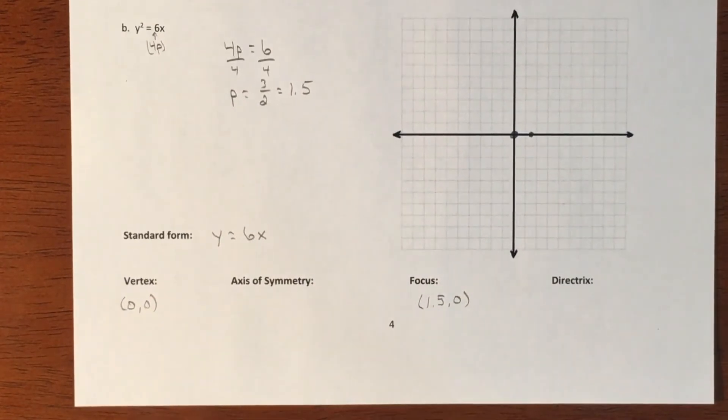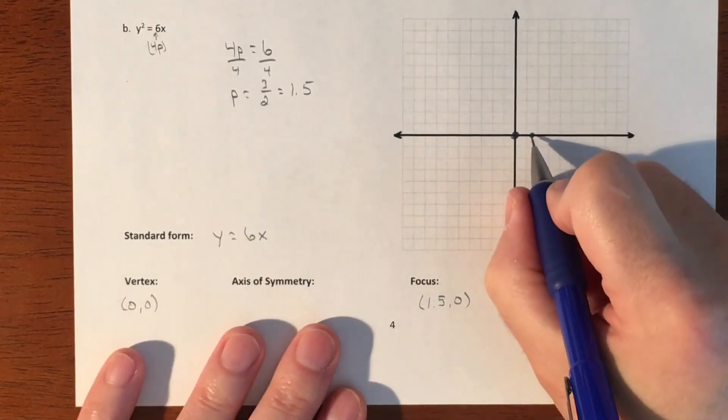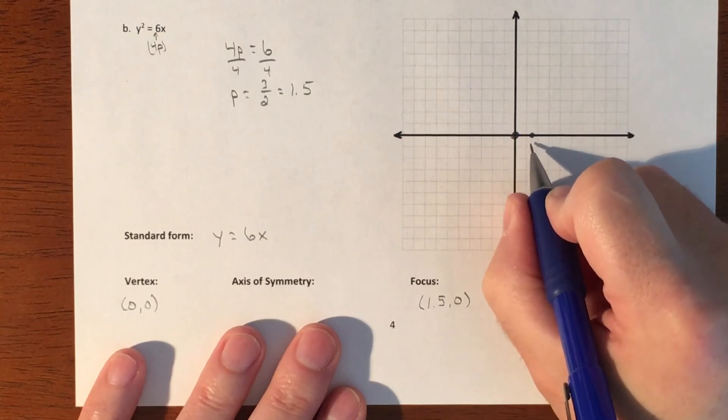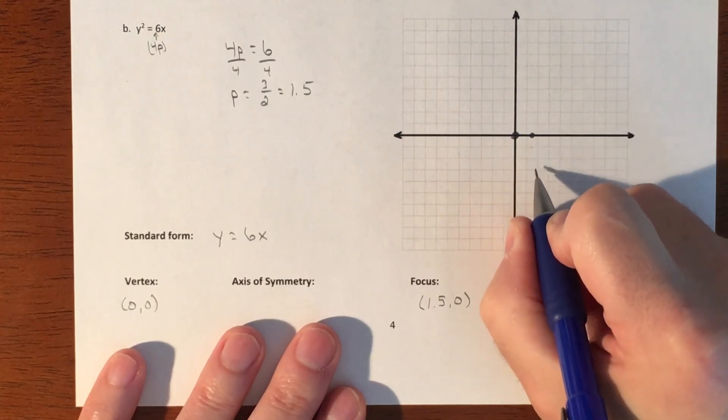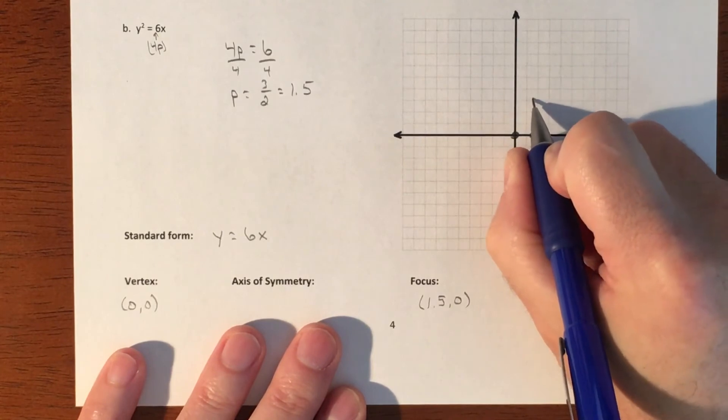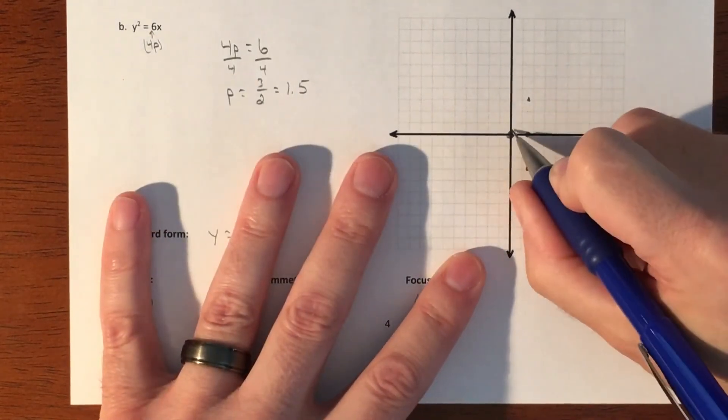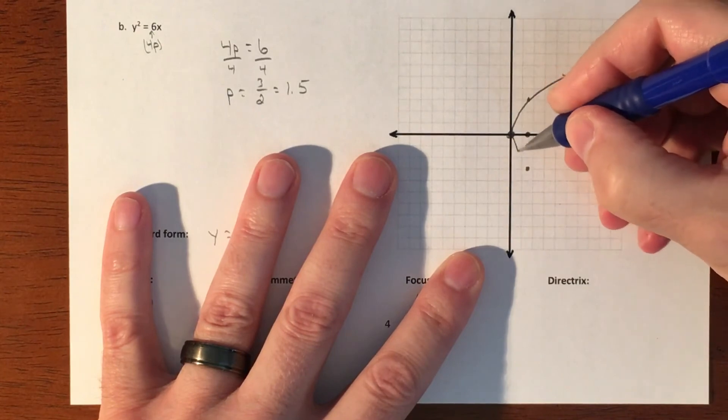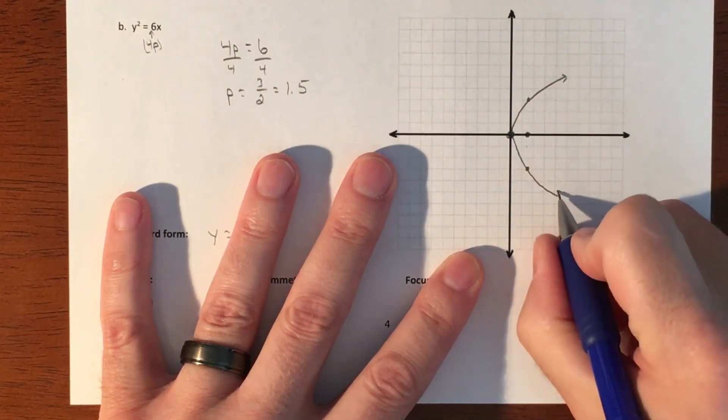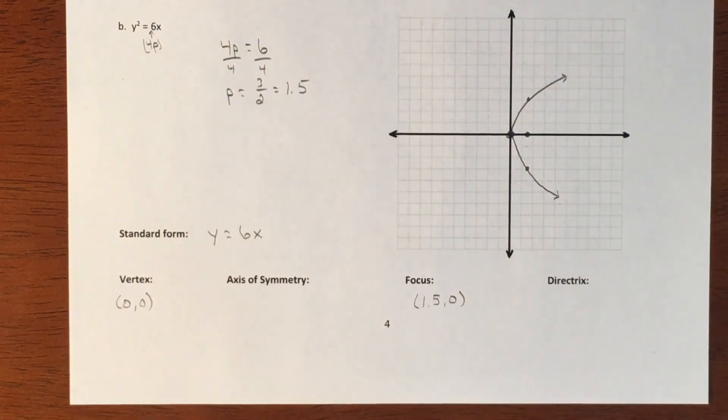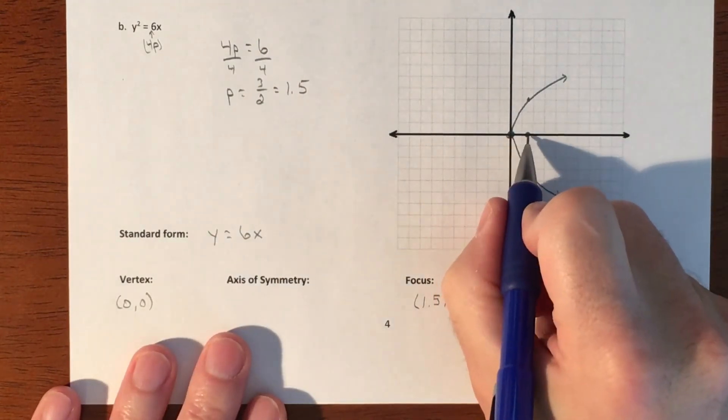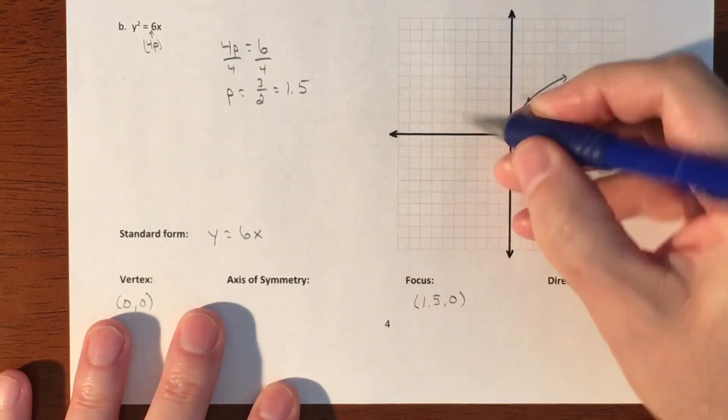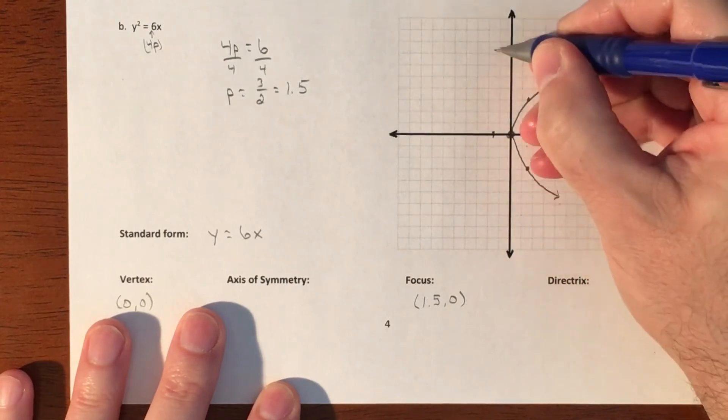And then if that distance is 1.5, then this will be out three, 1, 2, 3, 1, 2, 3. So that gives us a little bit of an idea of how wide or narrow our parabola is. Okay. And then this was 1.5. So this will be 1.5. And that's our directrix.